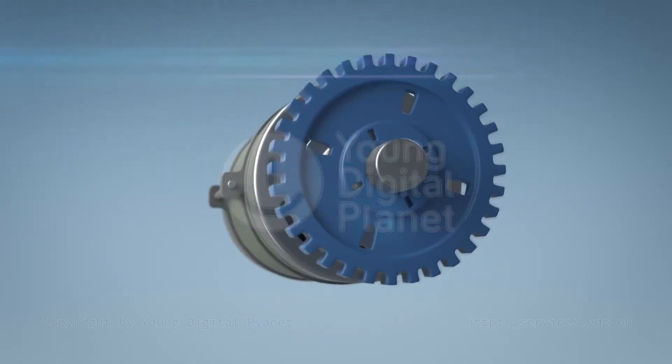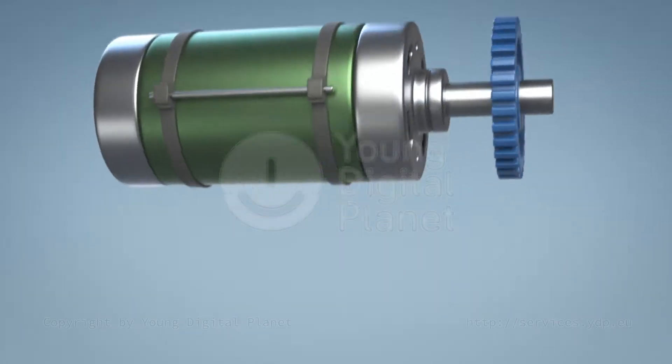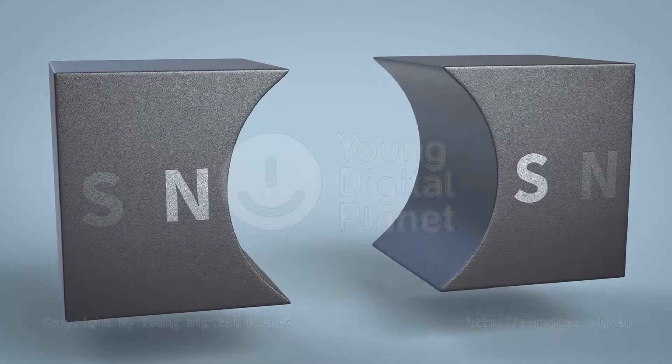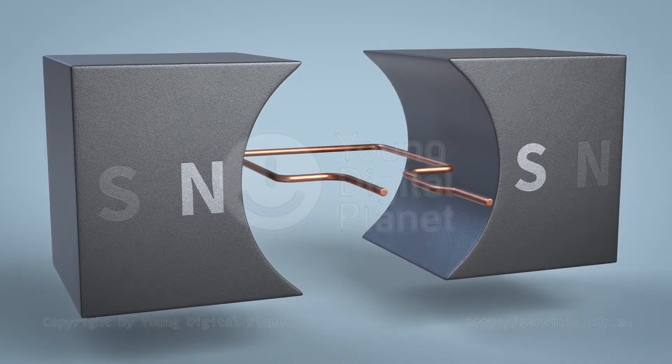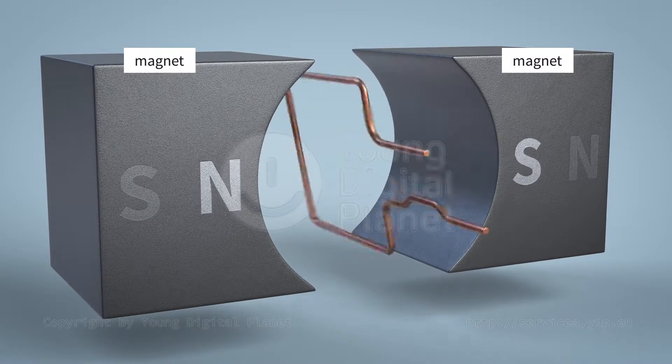To explain the principle of a DC motor, let us construct a simple model. A frame-shaped conductor is placed between the poles of the magnet. The frame can rotate. It is called the rotor.